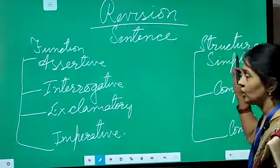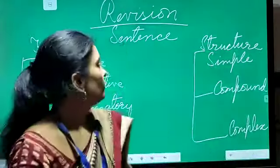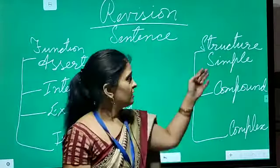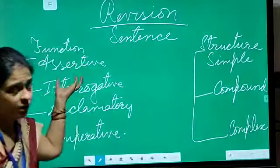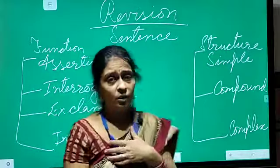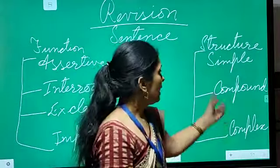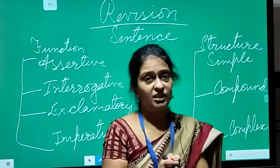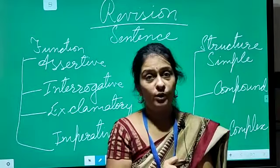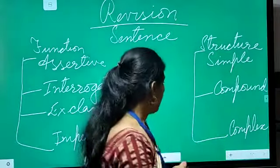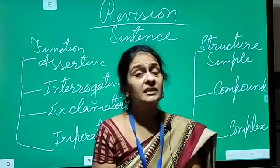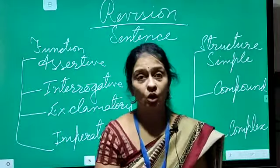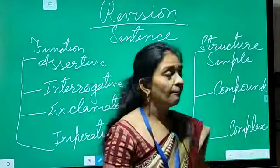Moving towards structure, there are three kinds of sentences: simple, compound, and complex. Simple sentences are related to assertive sentences used in a normal way of talking. Compound sentences are joined together by conjunctions and we follow the rule of FANBOYS. In a complex sentence we have one independent clause and one or more dependent clauses.